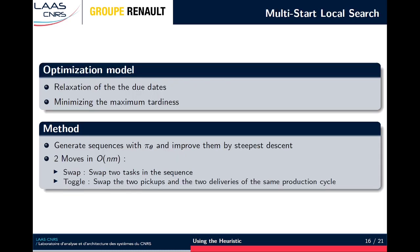Beside these two CP approaches, we also proposed a multi-start local search using the model with the relaxed due dates. It consists in generating sequences with the stochastic policy and improving them by steepest descent, until we get no tardiness or until timeout. We proposed two types of moves, and the time complexity of an iteration of the descent is in big O of NM, where N is the number of tasks and M is the number of components. The first move is a swap between two tasks in the sequence, and the second is what we call the toggle, based on the observation that there are only two dominant orderings for the four operations of a cycle. This move consists in changing the order. More detail about this move can be found in the paper.